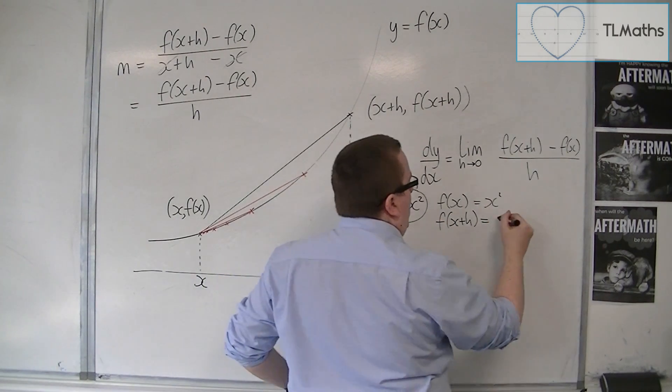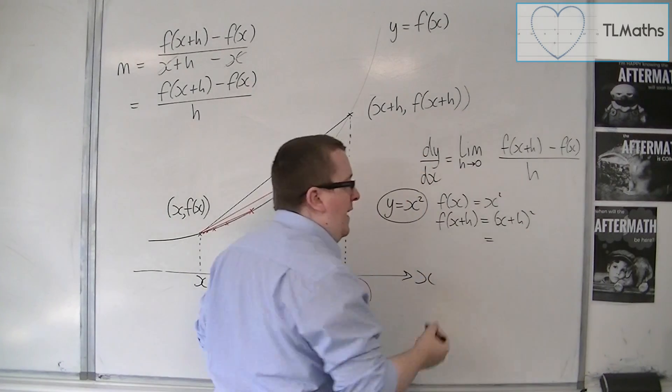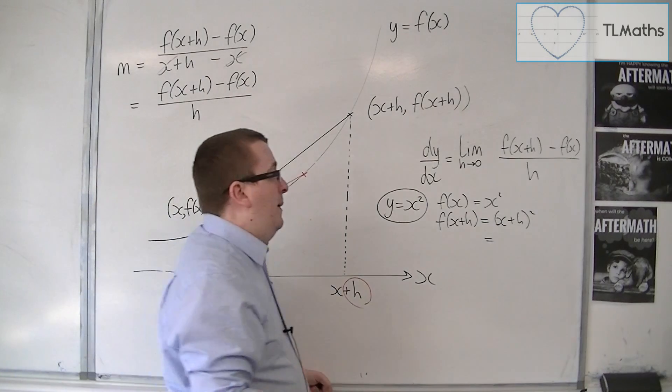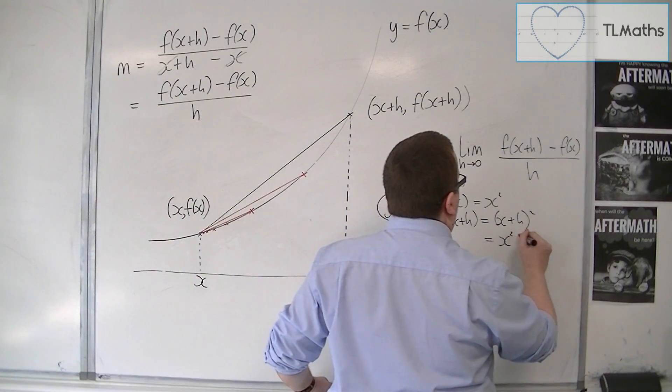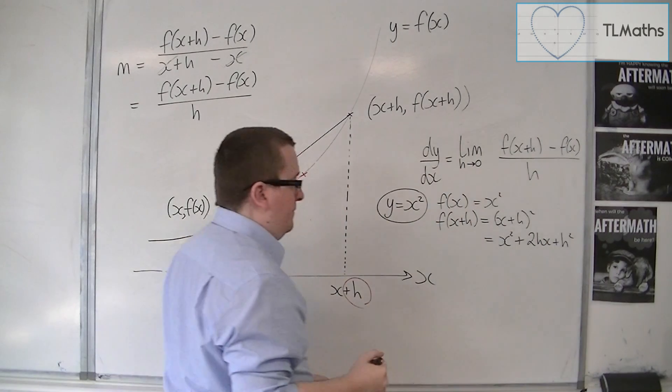So if f of x is x squared, then f of x plus h is x plus h squared. Now, that I can multiply out and expand. Because that's x squared plus 2hx plus h squared.